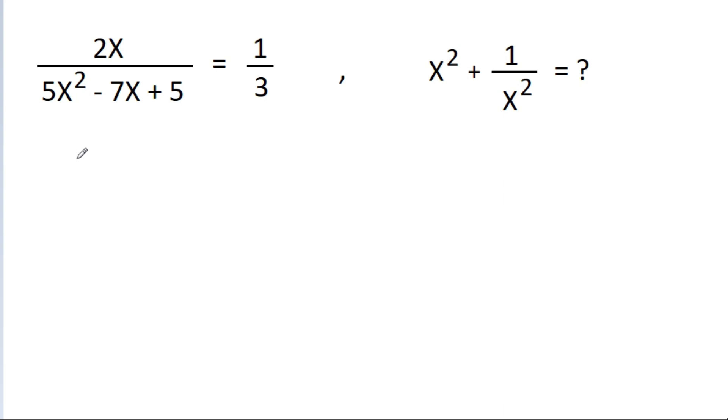So we have 2x/(5x² - 7x + 5) = 1/3. Now if we cross multiply, we get 6x = 5x² - 7x + 5.